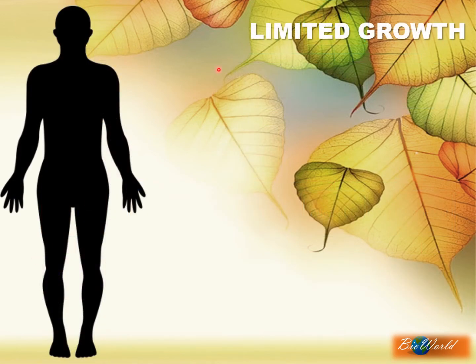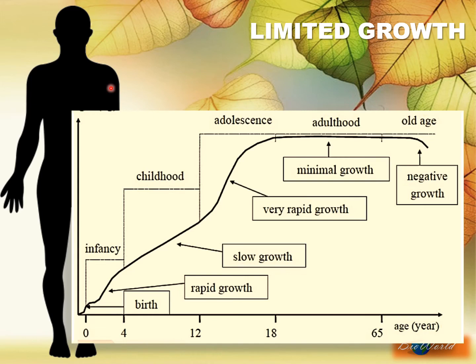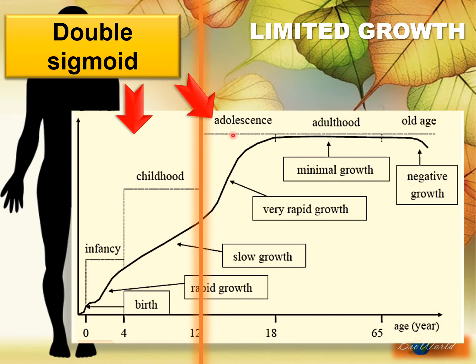The human growth pattern is of limited growth, because humans have an expiry date. You can see in this graph that at about the age of 70, that is old age, negative growth occurs. During negative growth, the body shuts down and eventually leads to death. This pattern is actually two sigmoids. The first sigmoid includes birth, infancy, and childhood. The second sigmoid includes adolescence, adulthood, and old age. A sigmoid curve contains the lag phase, the log phase, and the constant phase.